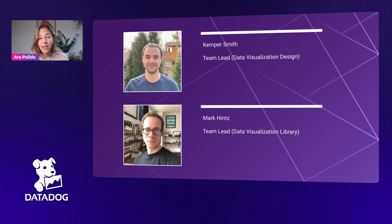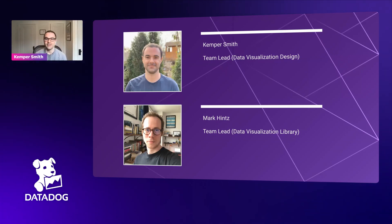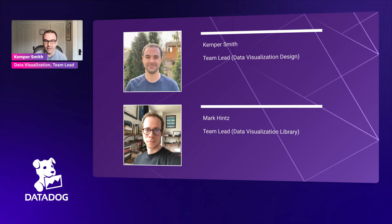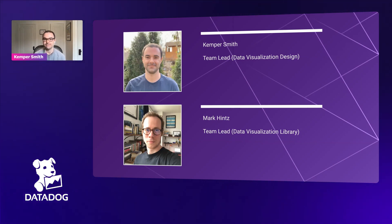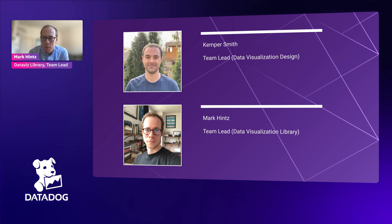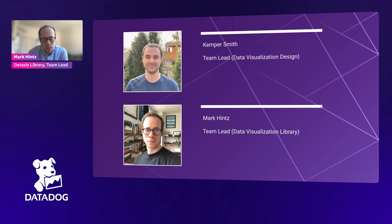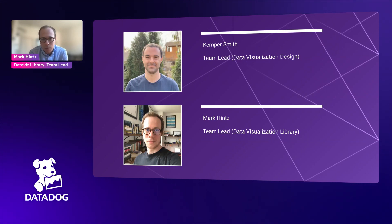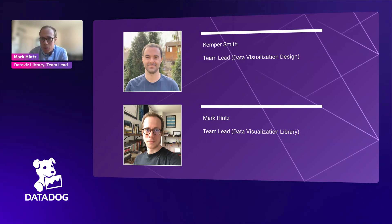The important people today are Kemper and Mark. Kemper Smith is the team lead of the data visualization design team. Their team works with other product teams and engineering teams on early-stage designs for visualizations across Datadog. Mark is the engineering team lead for one of the two DataViz engineering teams at Datadog. His team, called DataViz Library, builds a lot of the framework code that other front-end engineers use to embed visualizations in the app, the code that gets data into visualizations, and a core set of visualizations.